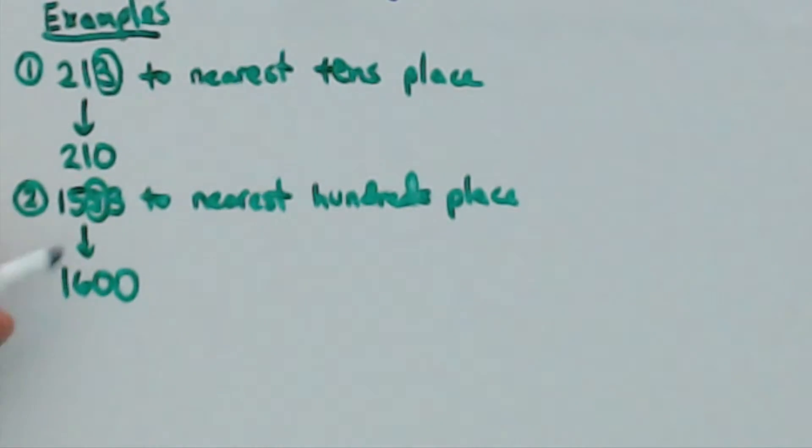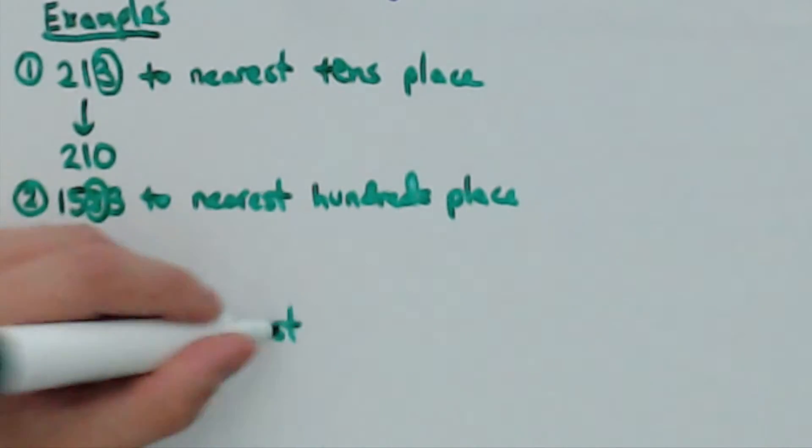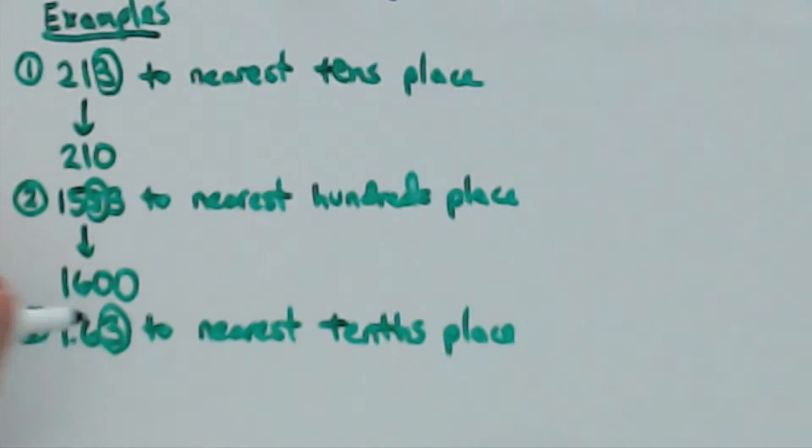Number 3 says to round 1.63 to the nearest tens place. You need to look at the number directly to the right of the tens place, which is the hundreds place. The number is 3, and since it is less than 5, the number needs to be rounded to 1.6.